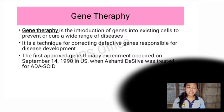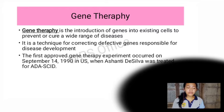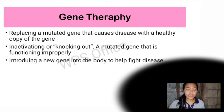Gene therapy is the introduction of genes into existing cells to prevent or cure a wide range of diseases. It is a technique for correcting defective genes responsible for disease development. The first approved gene therapy experiment occurred on September 14, 1990 in the US when Ashanti de Silva was treated for ADA-SCID. Gene therapy also involves replacing a mutated gene that causes disease with a healthy copy of the gene, or activating or knocking out a mutated gene that is functioning improperly.